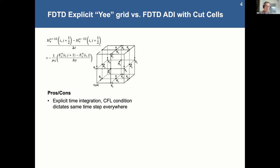It's an explicit time integration. Your CFL condition dictates the same time step everywhere. So that can be painful, but you can use adaptive mesh refinement to get around that. And also the CFL condition is to some extent expressing your wave resolution accuracy as well.